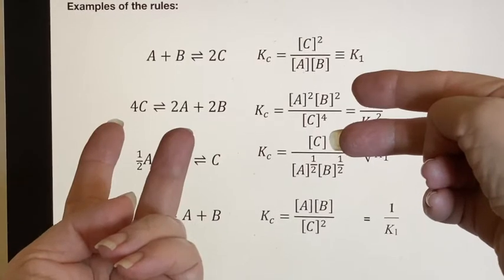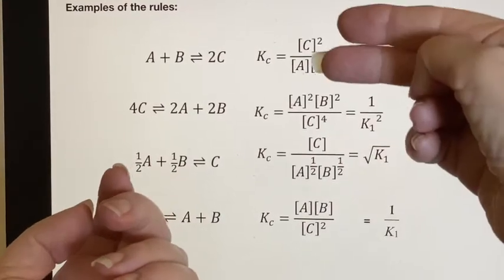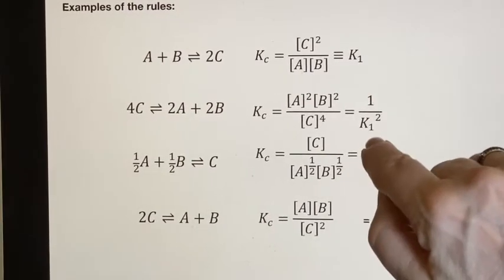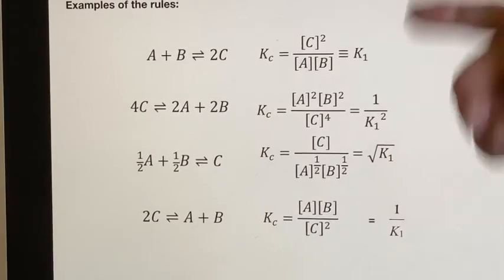This was multiplied by two as well. This will be raised to the power two. Well, one to the second is still one, but K sub one then would be squared. It would be on the bottom.